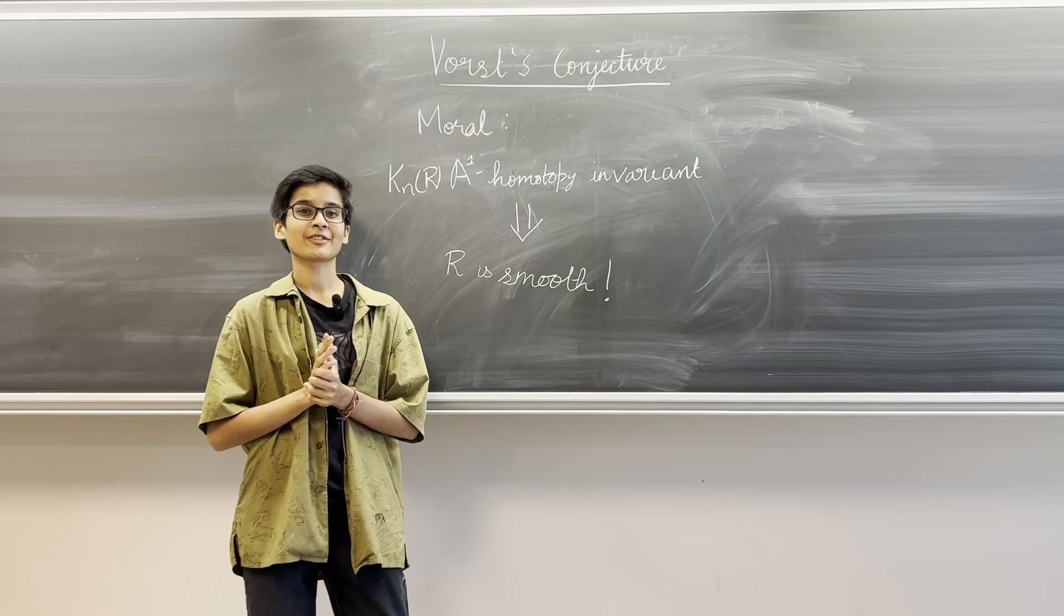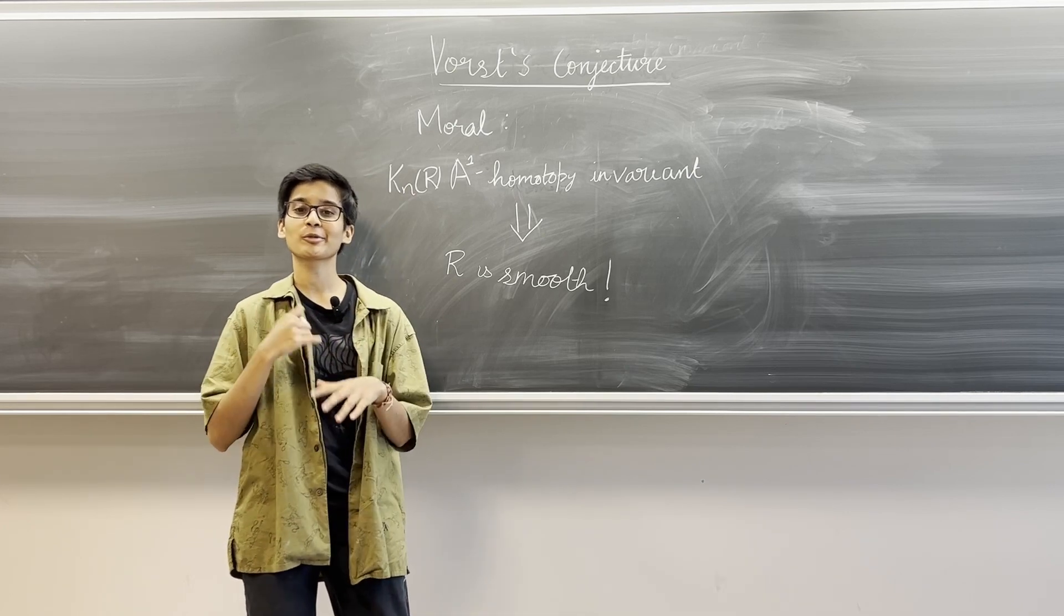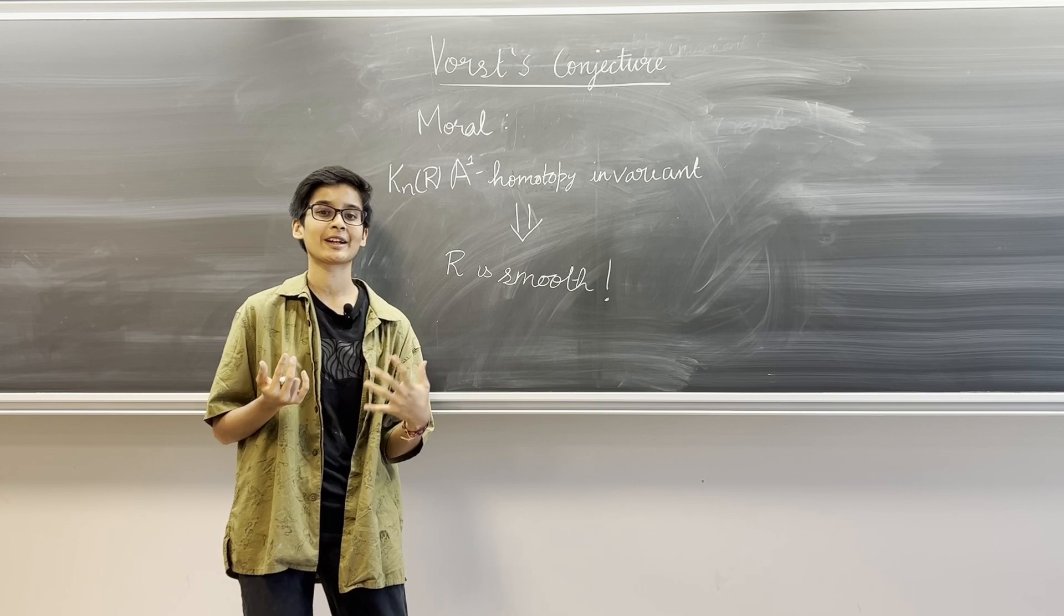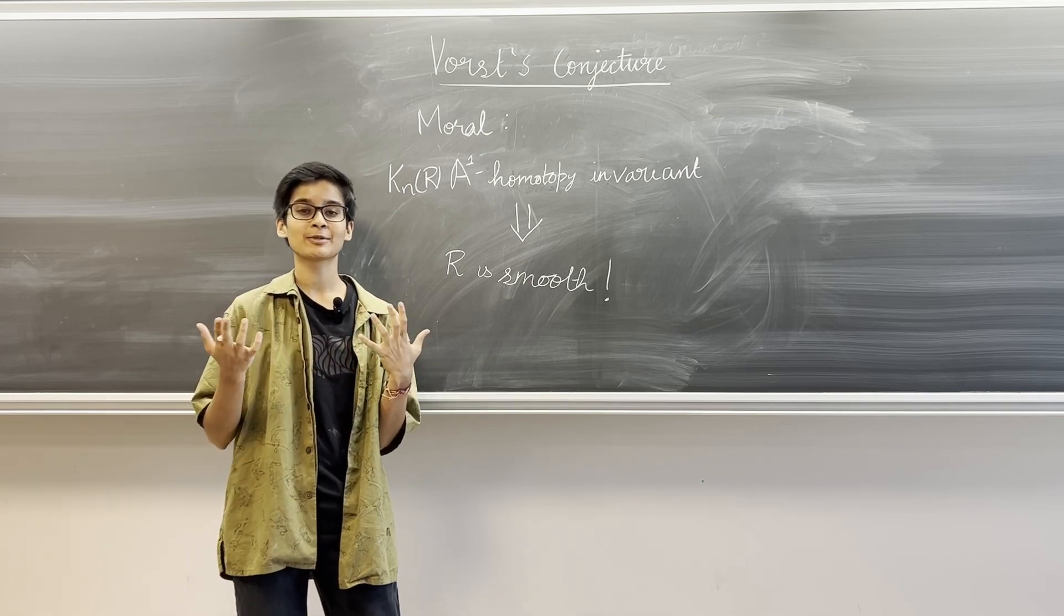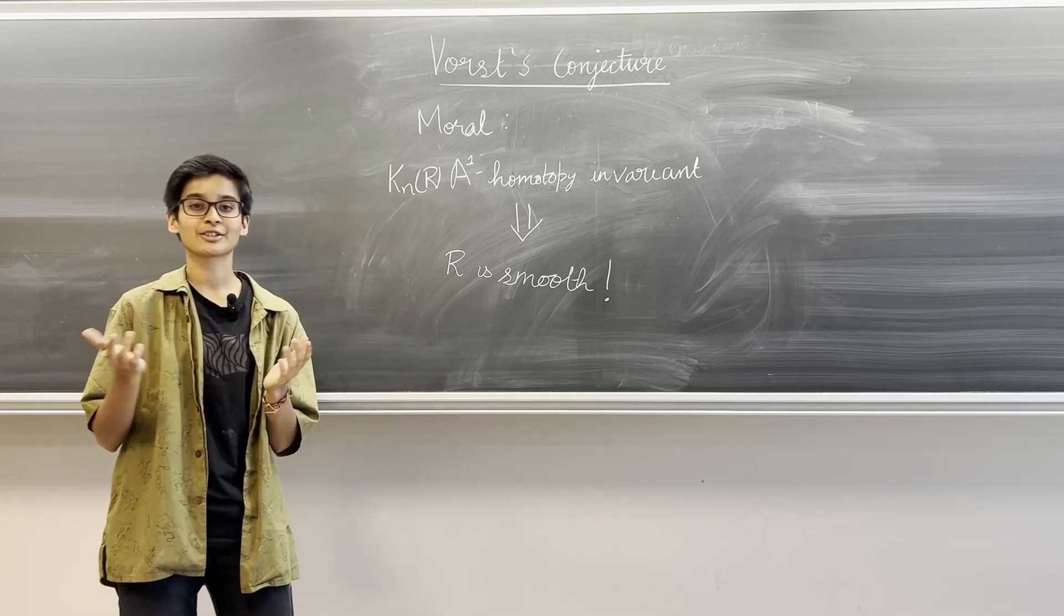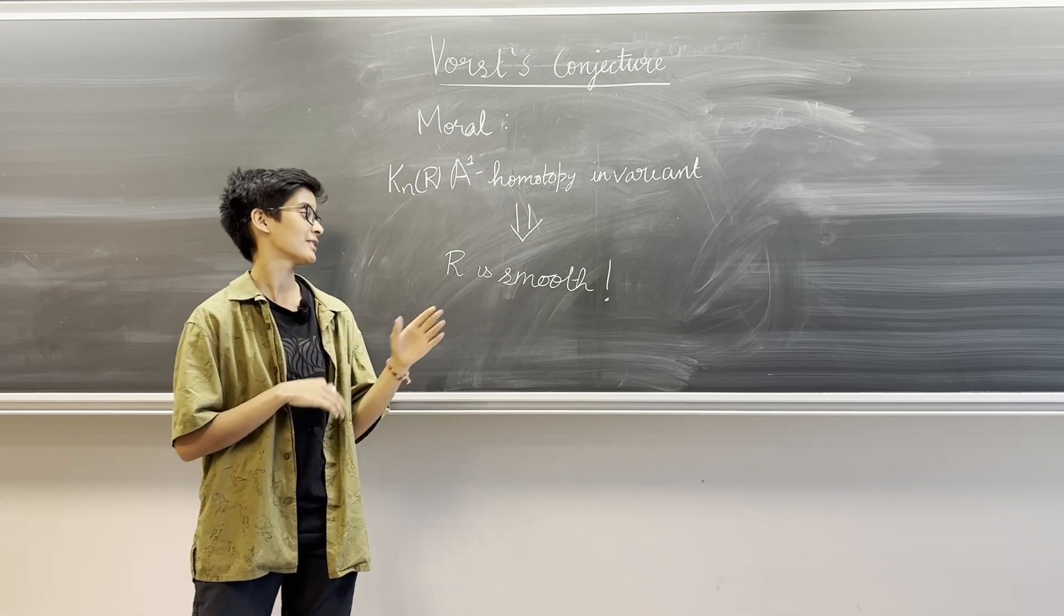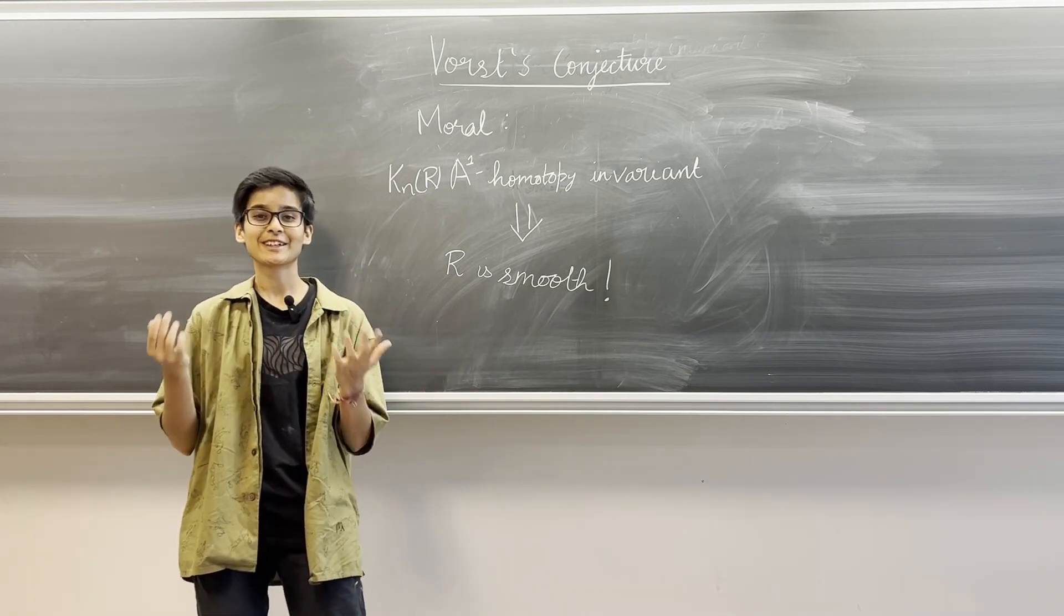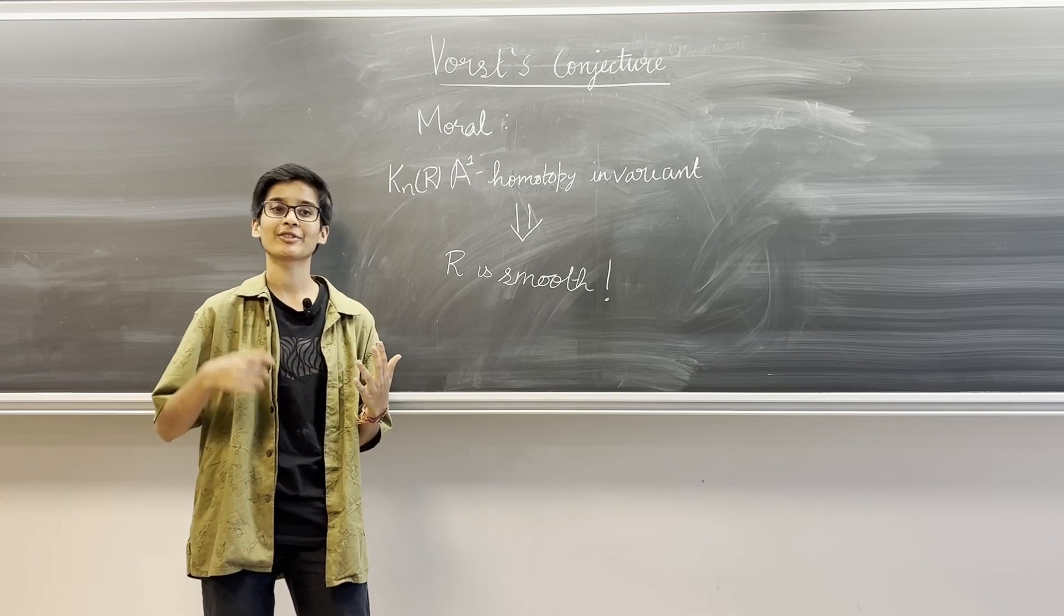One might ask if the converse statement is true, if knowing something about the homotopy invariance of the K groups of a variety can help us detect singularities in the variety. And this is where Vorst's conjecture comes in. Morally speaking, this conjecture states that the homotopy invariance of K-theory detects singularities. We can study the K-theory of a geometric shape to understand whether it is smooth or if it contains singularities.